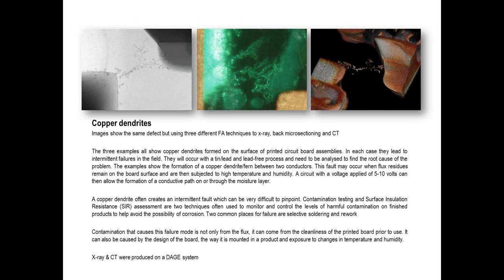The examples on this slide are common examples of dendrite formation — copper dendrites forming between two surfaces. I've used three different techniques in failure analysis: standard X-ray on the left, micro-sectioning in the center image where you can see the Christmas tree formations growing green in color, and CT on the right. These are typical examples of dendrite failures on printed circuit boards, which most commonly occur during rework and repair or selective soldering. If you're cleaning the products, you possibly eliminate the possibility of this happening.